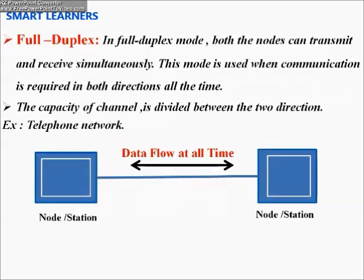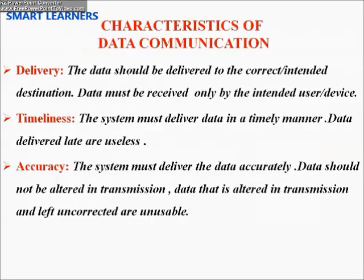In full duplex mode, both nodes can transmit and receive simultaneously. This mode is used when communication is required in both directions at all times. The capacity of the channel is divided between the two directions. An example is the telephone network.